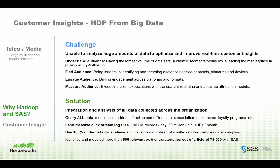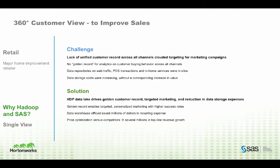With the SAS and Hortonworks solution, the customer was able to run advanced analytics and data discovery with visualization on 100% of their data, whereas in the past they could only use a small, random sample. Our second customer story comes from the retail market. At a major home improvement retailer, they were challenged by the lack of a unified customer record across all channels, which clouded target marketing campaigns. There was no golden record — the data was siloed and storage costs were continuing to increase.